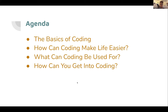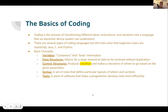The basic definition of coding is the process of transforming ideas, instructions, and solutions into a language that an electronic device or system can understand. There are several types of coding languages, but the main ones beginners use are JavaScript, Java, C, and Python. Some main concepts important when you first start coding are variables — like a container to hold information — data structures, which allow for large amounts of data without duplication, and control structures, which analyze variables and make decisions based on given parameters. Syntax is a set of rules that define particular layouts of letters and symbols, and tools are pieces of software that help programmers develop code more efficiently.